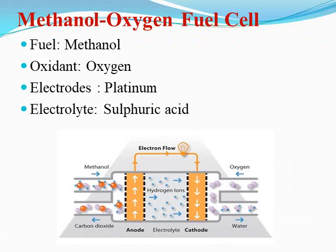The first fuel cell is the methanol-oxygen fuel cell. Prerequisites: the fuel is methanol, methanol is mixed with sulfuric acid, and the oxidant is oxygen. Electrodes are made of either platinum or graphite — inert electrodes — and the electrolyte is dilute sulfuric acid.